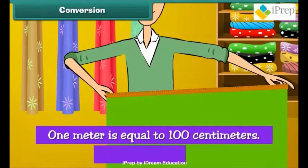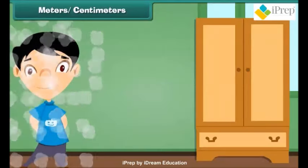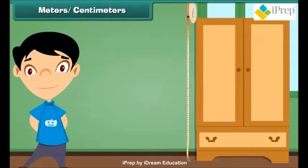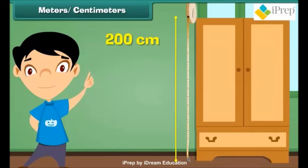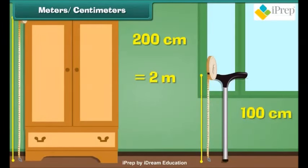One meter is equal to 100 centimeters. We can measure the height of the almira by using measuring tape. The height of the almira is 200 centimeters. Therefore, we can say that the height of the almira is 2 meters. Similarly, the length of walking stick is 100 centimeters, or we can say 1 meter.